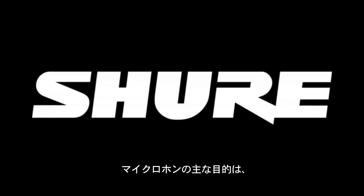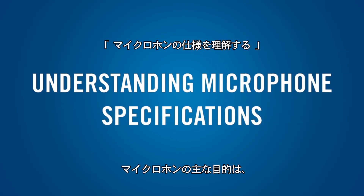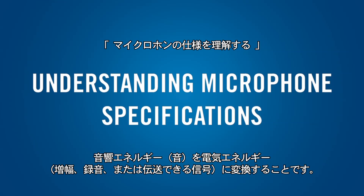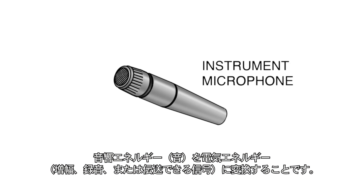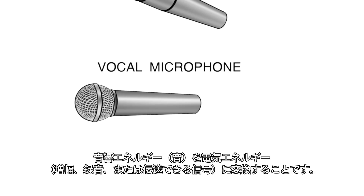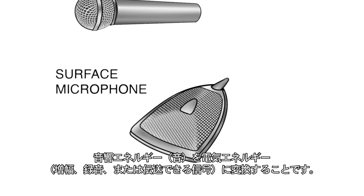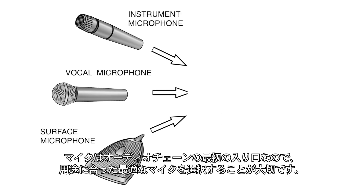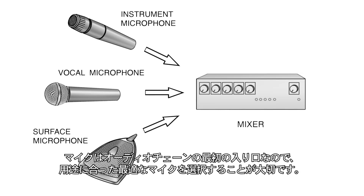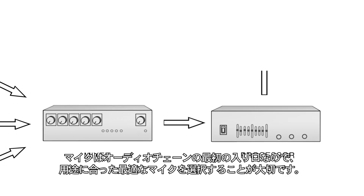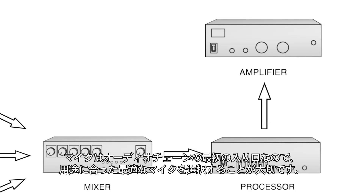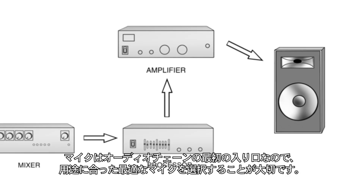A microphone's primary purpose is to convert acoustic energy, sound, into electrical energy — a signal that can be amplified, recorded, or transmitted. Because the microphone is the first link in the audio chain, it's important to choose the right microphone for the job.